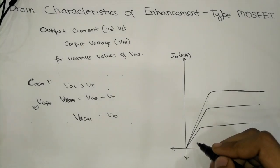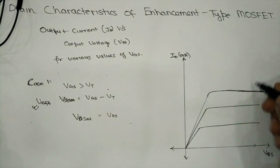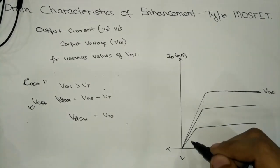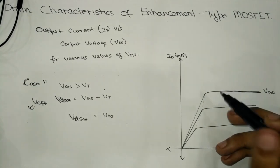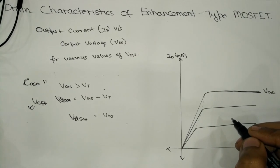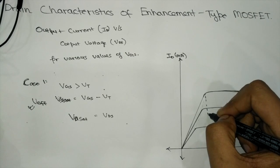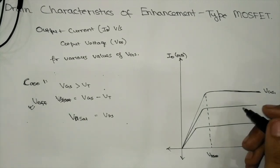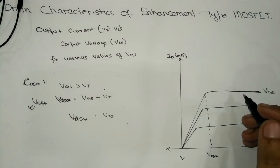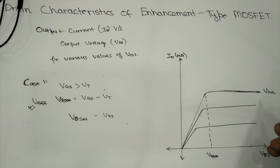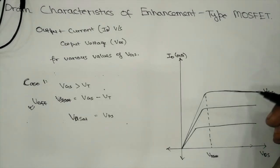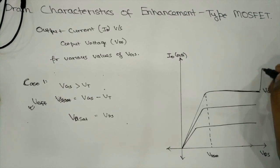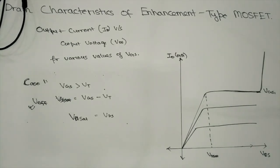As we see in the plot, initially when VDS is increased for a particular value of VGS, the drain current ID also increases in a proportional manner. But after a certain value of VDS, that is VDSAT, the drain current remains constant — it enters into the saturation region. On further increasing the voltage beyond the breakdown point, it increases rapidly in an exponential manner.